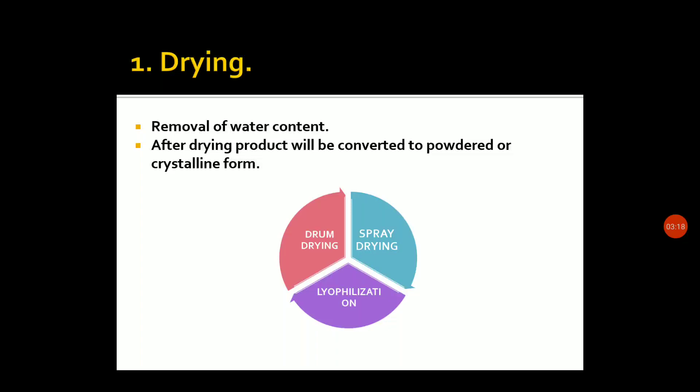The three methods used in drying are drum-drying, spray-drying, and lyophilization. Formulation methods are used in drying and crystallization. Drying is three types: drum-drying, spray-drying, and lyophilization.